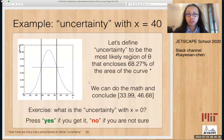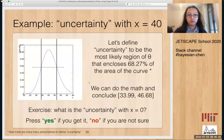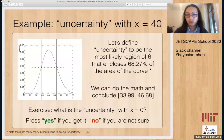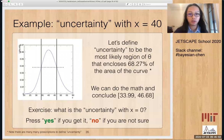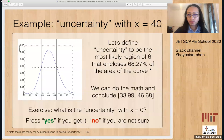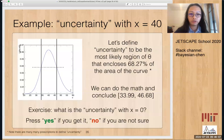One example is the uncertainty with x equals 40. For the sake of this exercise, let's define the uncertainty to be the most likely region of theta that encloses 68.27% of the area of the curve. If the curve is Gaussian, this range will be the 1-sigma range — that's where this number comes from. Under this definition, we can write down the analytical form of this posterior density function, do some math, and conclude that this range is 34 to 46.7.